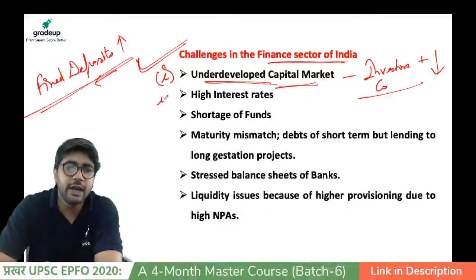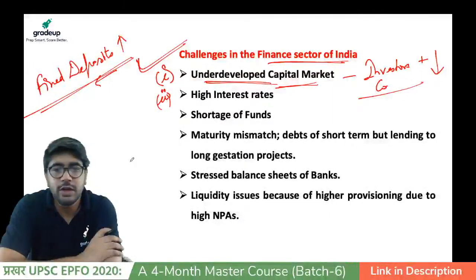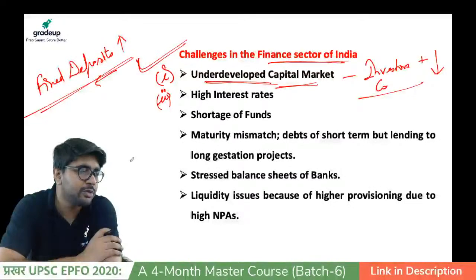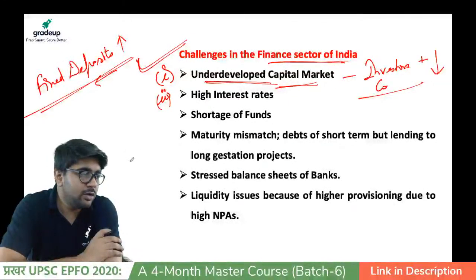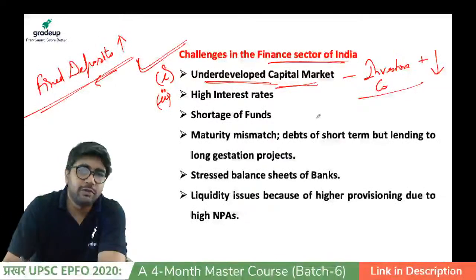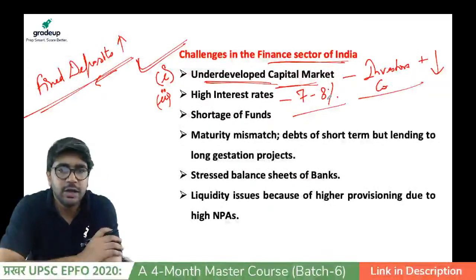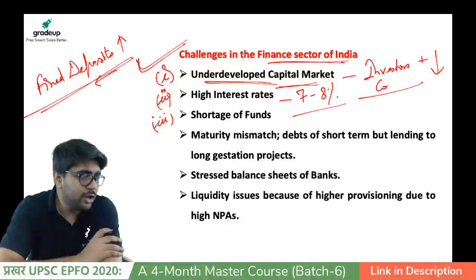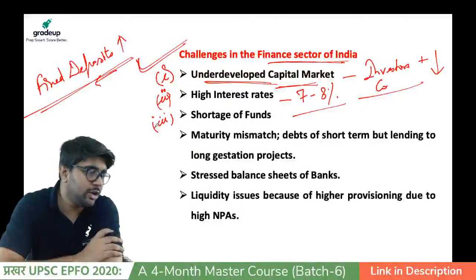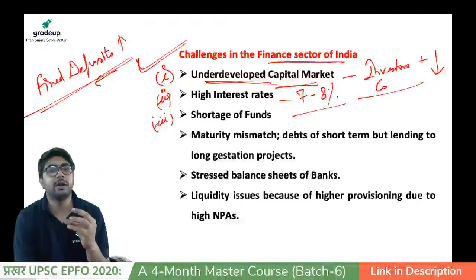Second, we have very high interest rates in banks compared to developed markets — for example, interest rates close to seven to eight percent. Third, there is a shortage of funds: for example, an industry applies for a loan of 50 lakh rupees but the loan sanctioned is just 10 lakh rupees.